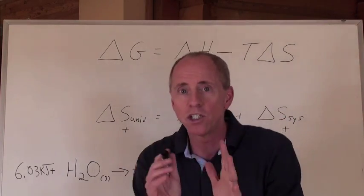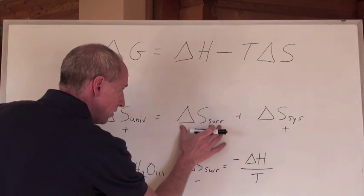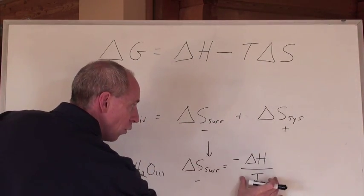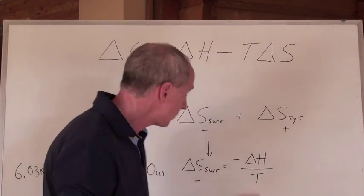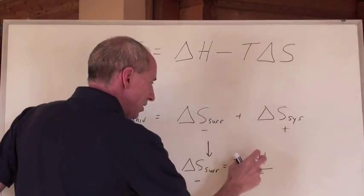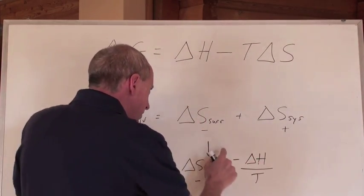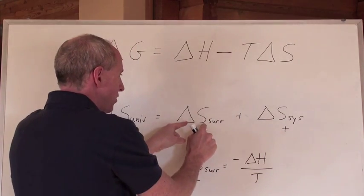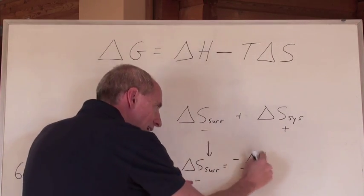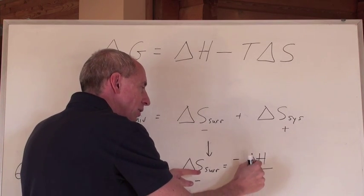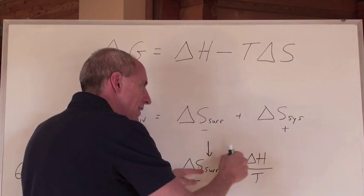I just wanted to show you that we can justify this entropy value here with this formula. If I wanted to just make this delta S surroundings a delta H value, I would have to actually multiply this number here by negative T.